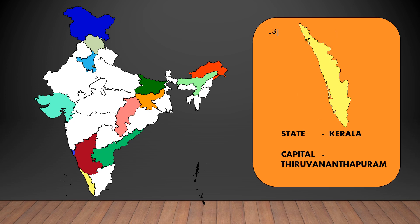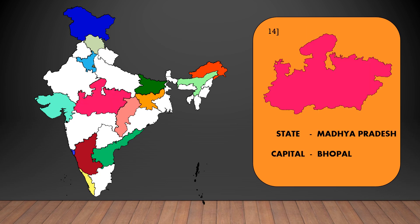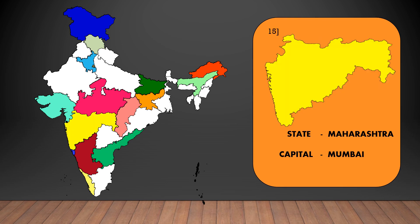The capital of Kerala is Thiruvananthapuram. The capital of Madhya Pradesh is Bhopal.